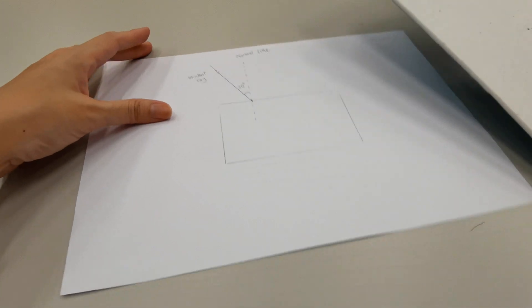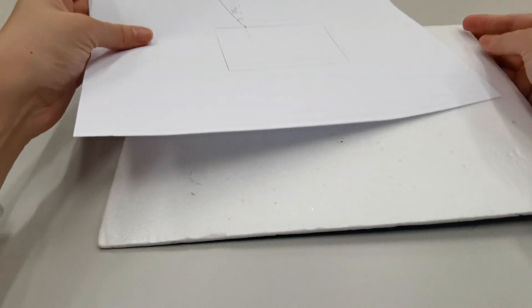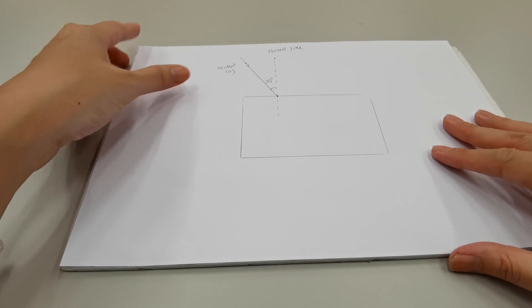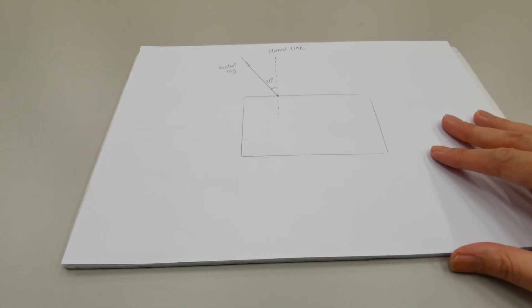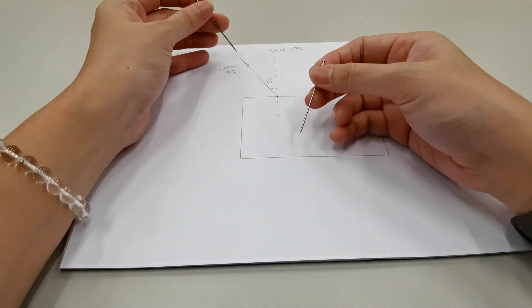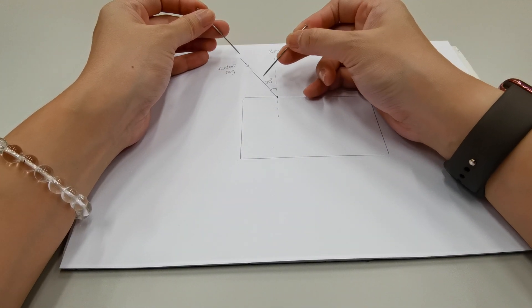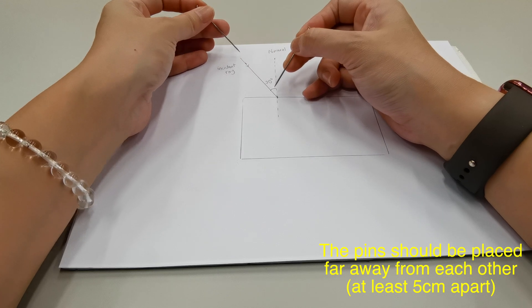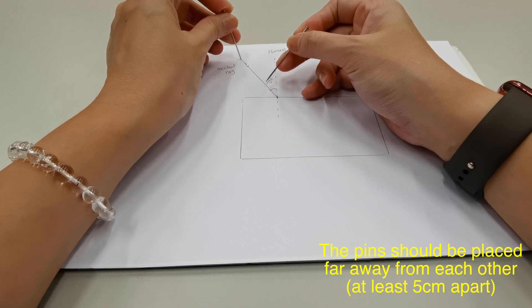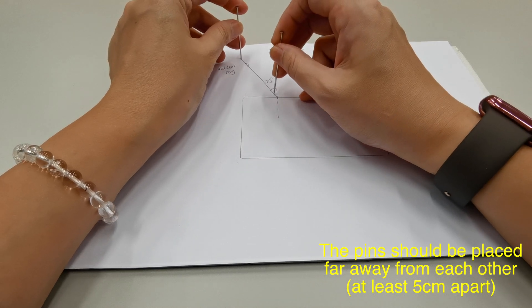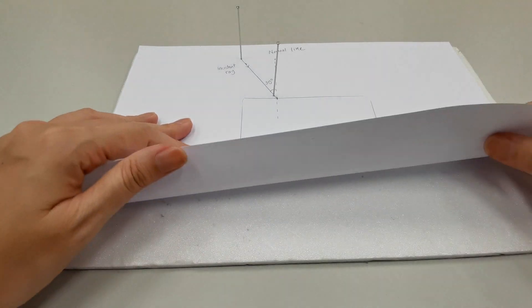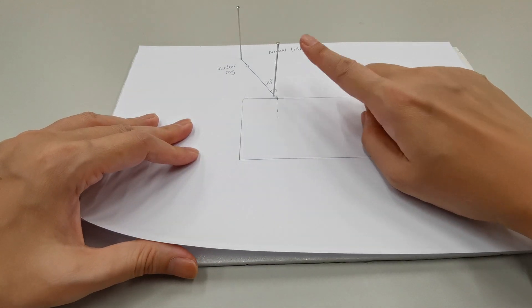With the foam board, we're going to place it underneath the paper. The purpose of the foam board is to allow the pins to poke through and to hold up. Using two optical pins, we're going to poke the pins on the incident ray. Try to get them to be as far away from each other as possible, at least five centimeters apart. The further apart, the better. When you poke the pins, try to make the pins upright.